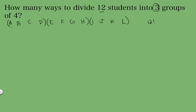We notice that each group can be represented 4 factorial different ways and still give us the same group. The same applies to each of the other two groups — 4 factorial different ways each. So we need to divide by 4 factorial to the third power, because we don't care how we permute the elements within a group. As long as they're all in the same group, it's the same thing to us.